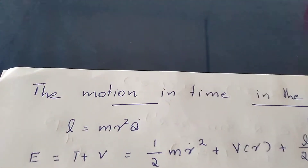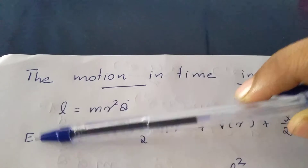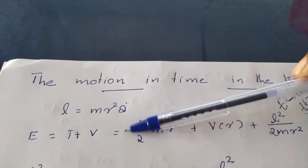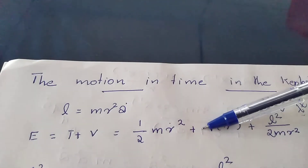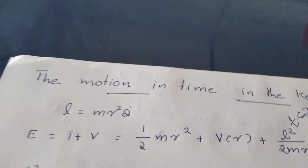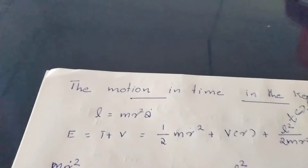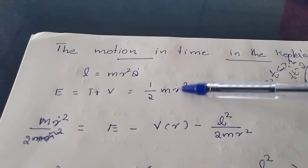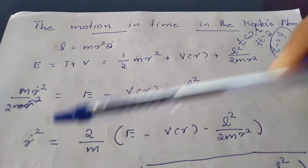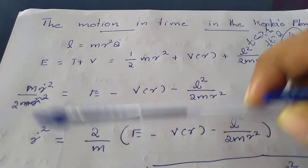The angular momentum for a central force is given by L is equal to mr squared theta dot. The total energy is given by: total energy equals kinetic energy T plus potential energy V, that is T plus V. We have the kinetic energy T equal to half m r-dot squared, and the potential energy V of r plus L squared by 2mr squared, where L squared by 2mr squared is the effective potential which reduces the two-body problem into a one-body problem. So half m r-dot squared is equal to E minus V of r minus L squared by 2mr squared.